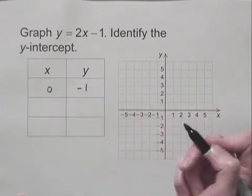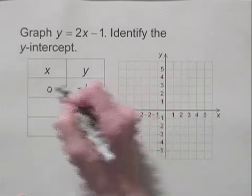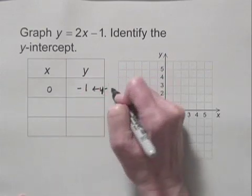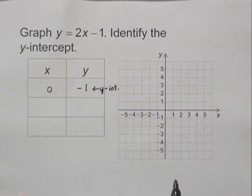So we can fill in that point. And we'll just note that this is the y-intercept. I'll just abbreviate. Now let's find a couple other points on the line.